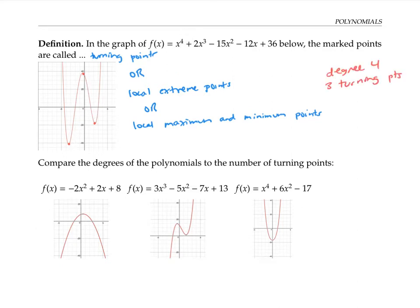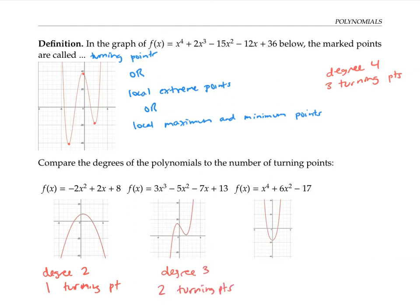Let's compare the degree and the number of turning points for these next three examples. For the first one, the degree is two and there's one turning point. For the second example, the degree is three and there are two turning points. For this last example, the degree is four and there's one turning point. For the first example and the next two, the number of turning points is exactly one less than the degree.